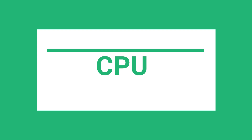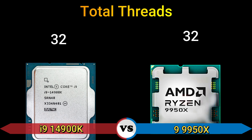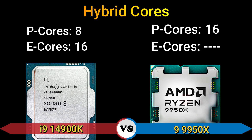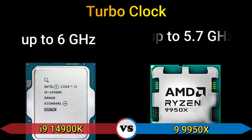Part 2 — CPU. Total cores: 24 and 16. Total threads: 32. Hybrid cores — performance cores 8 equals 16 and performance cores 16. Frequency: 3.2 GHz and 4.3 GHz. Turbo clock: up to 6 GHz and up to 5.7 GHz.